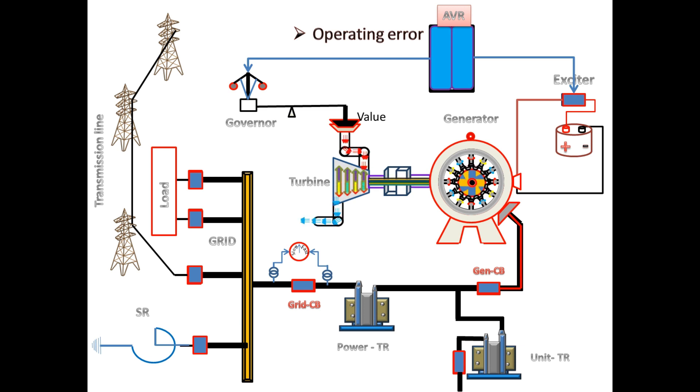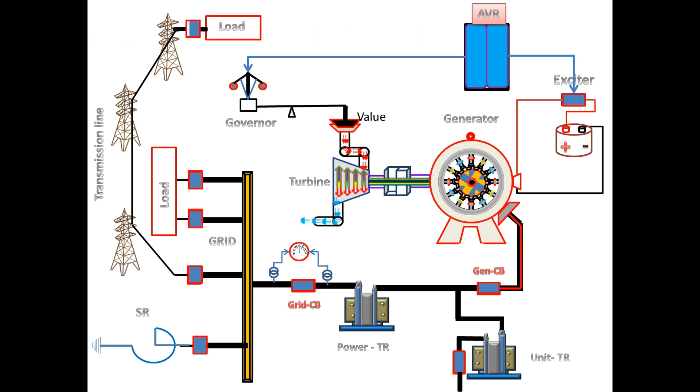Next, we are going to see the causes by system side. First, due to some reason, if sudden load is off on grid, then over flux is produced. Second, if the long transmission line is charged without load, then on the line the Ferranti effect is produced.